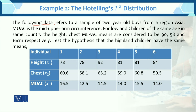The following data refers to a sample of two-year-old boys from a region of Asia. We have data for two-year boys from the Asia region. MUAC — this is called the MUAC — is the mid upper arm circumference. For lowland children of the same age in the same country, the height, chest, and MUAC means are considered to be 90, 58, and 16 respectively. We have to test the hypothesis that the highland children have the same means.